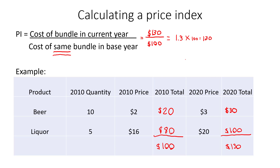The price index in the base year is always equal to 1 — if something costs $1 in 2010, it costs $1 in 2010. A price index of 1.3 means that if something cost $1 in 2010, it costs $1.30 on average in 2020, because of inflation over that time period.